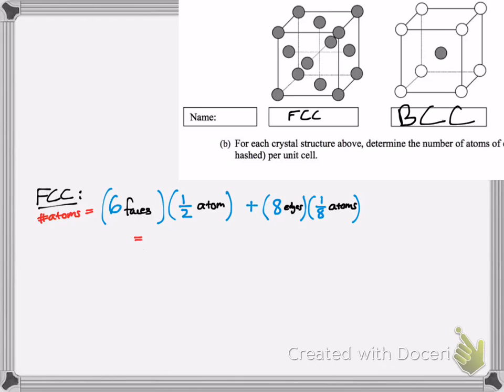So simply, you multiply and do your math, you know, six divided by two is three, and eight divided by eight is one. And add those two together, and you figure out there are four atoms per unit cell for a face-centered cubic structure.